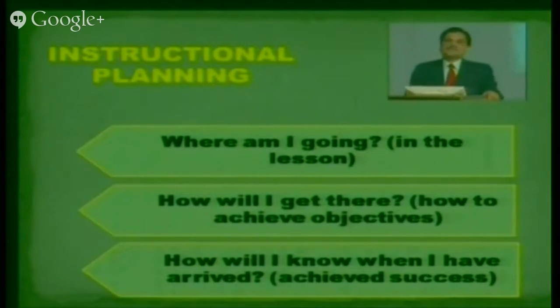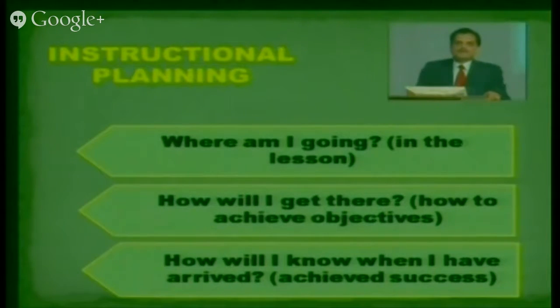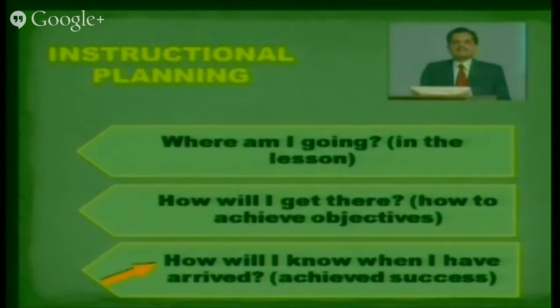Instructional planning attempts to answer three questions. First: Where am I going? That is, what will the student be able to do at the end of a unit of instruction — what are the instructional objectives? Second: How will I get there? That is, what method, what media, what evaluation procedure will the teacher employ to achieve the objectives? Third: How will I know when I have arrived? During explanation and at the end of the session, the teacher may ask questions to get feedback on how successful the session has been.